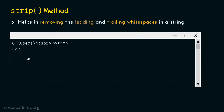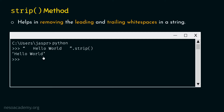Let's open our command prompt and activate the Python interactive shell. We type 'Hello world' with leading and trailing whitespaces, then dot strip and parentheses. We can call strip method on a string by providing dot, then strip, then parentheses. It can be observed that this string has some leading and trailing whitespaces. If we hit enter, we get the string 'Hello world' because strip method has removed those leading and trailing whitespaces.